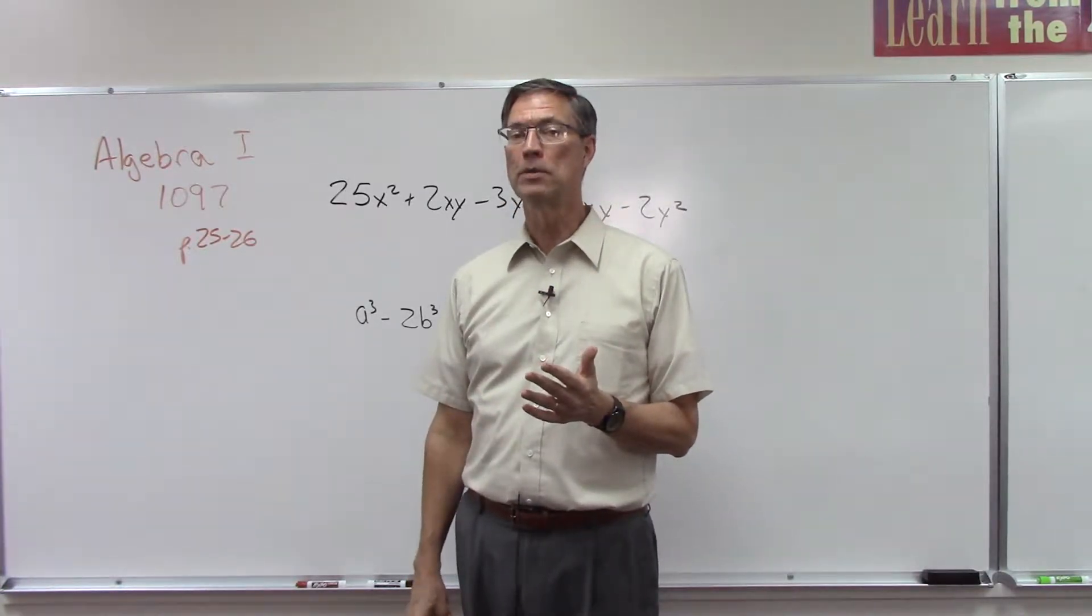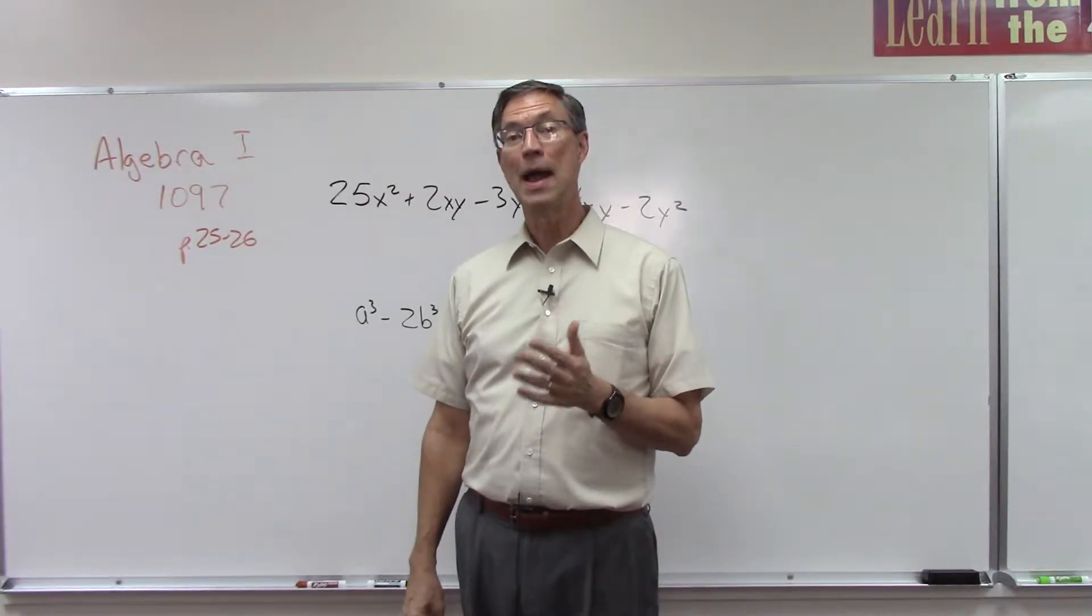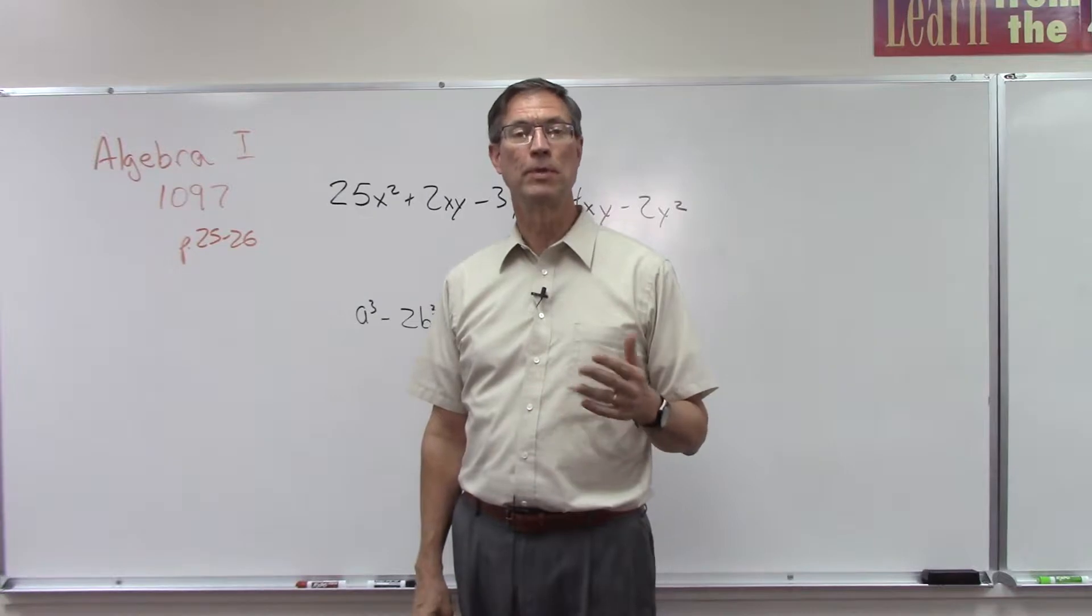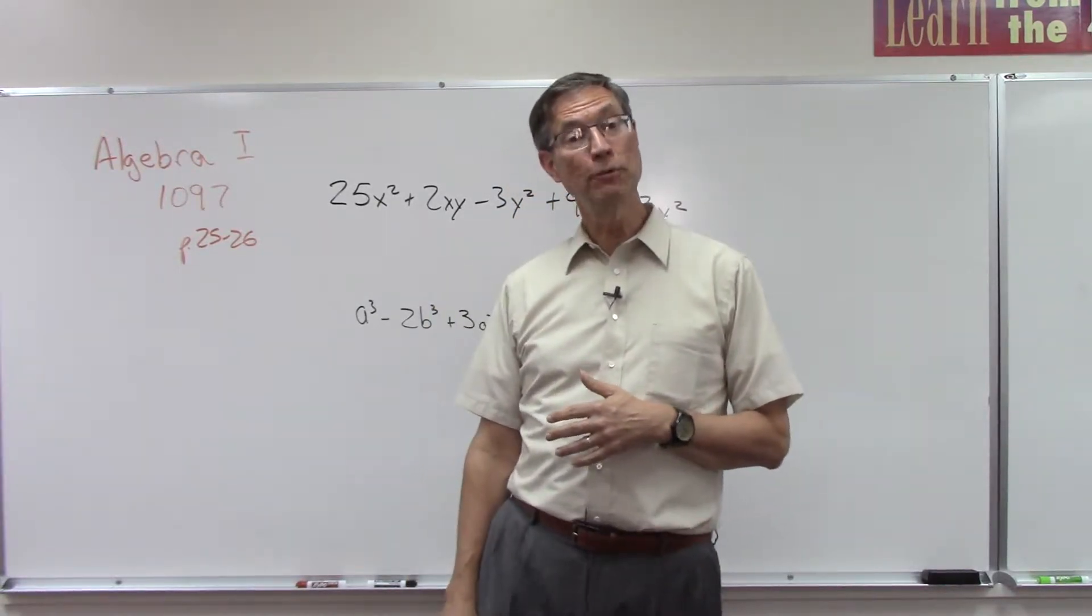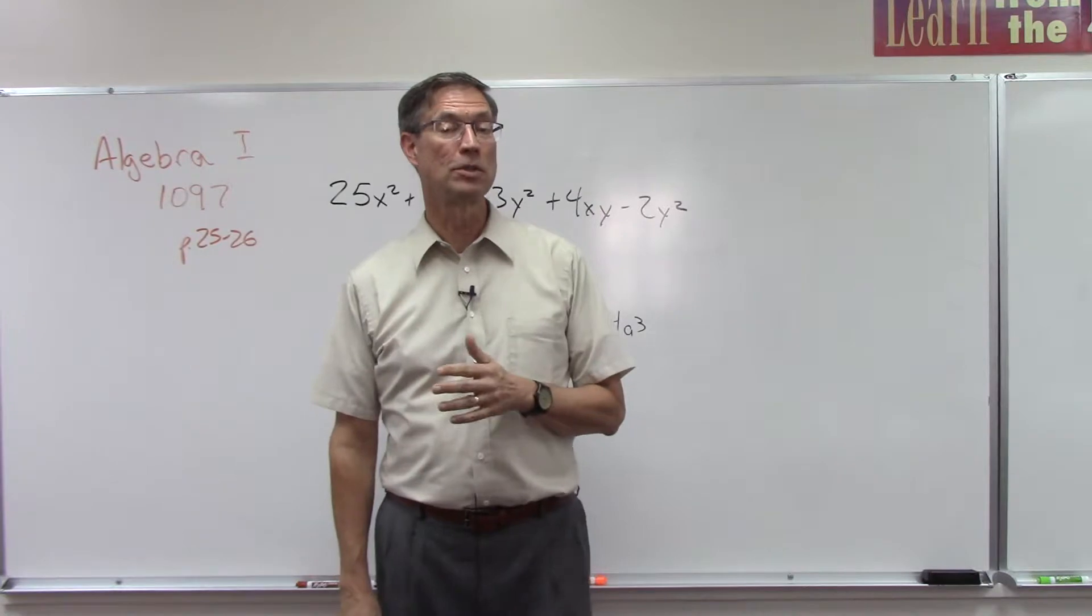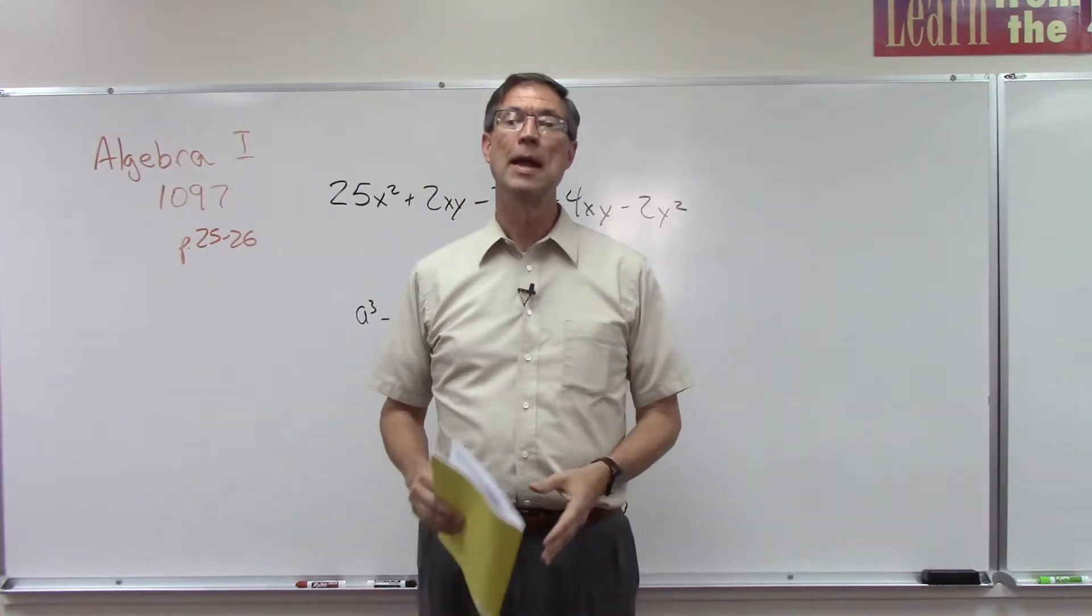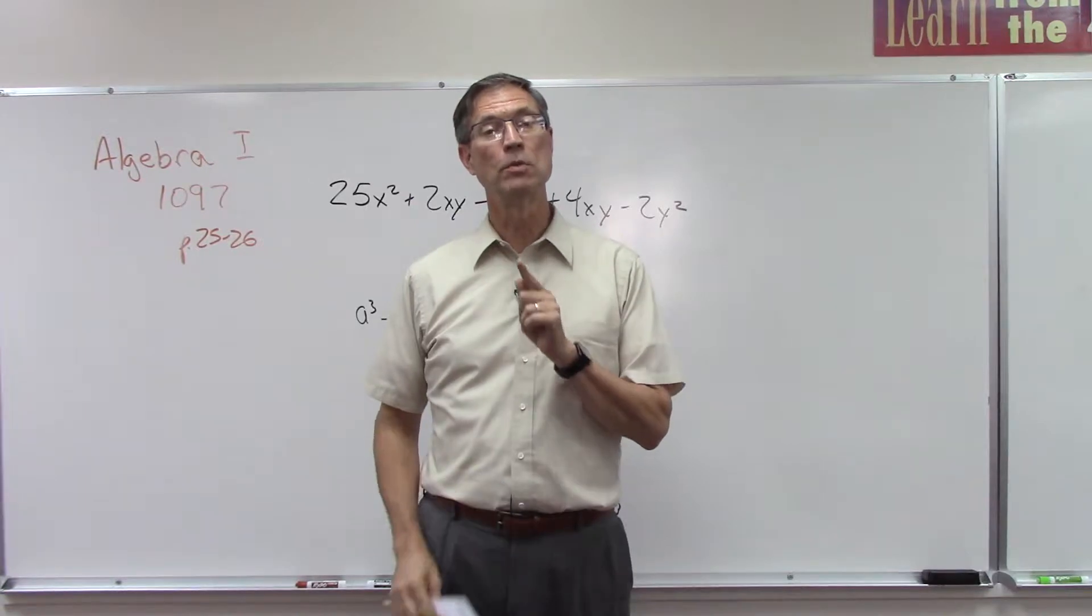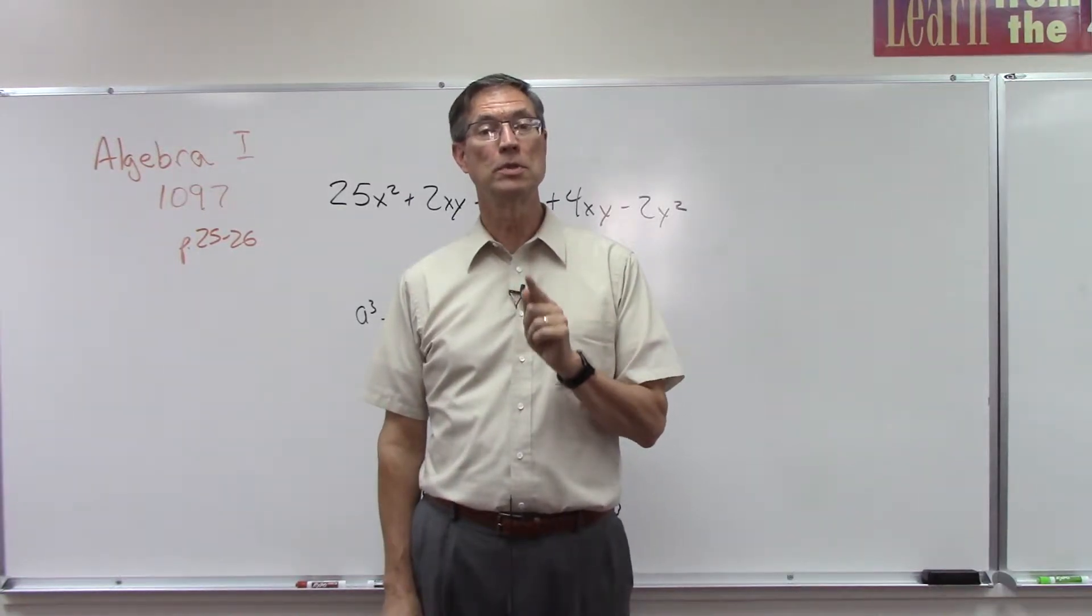If we're adding and the signs are the same, we add and keep the common sign. If we're adding and the signs are different, then we subtract the smaller from the larger and keep the sign from the larger. If we're doing subtraction, we always change the subtraction to addition and change the second number or second term to its opposite.